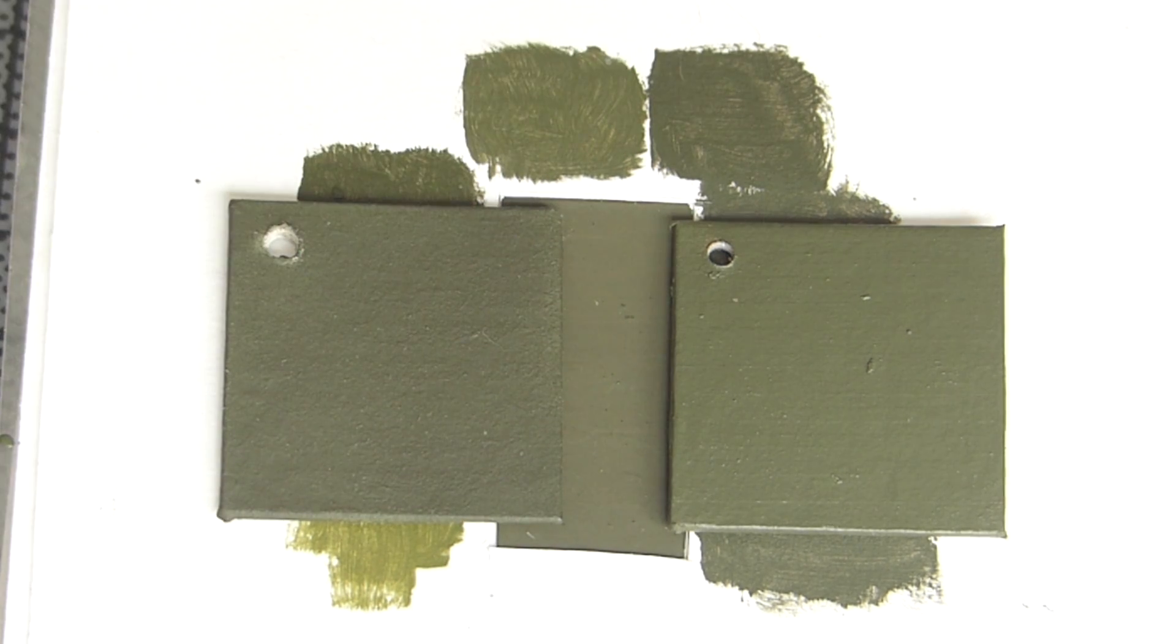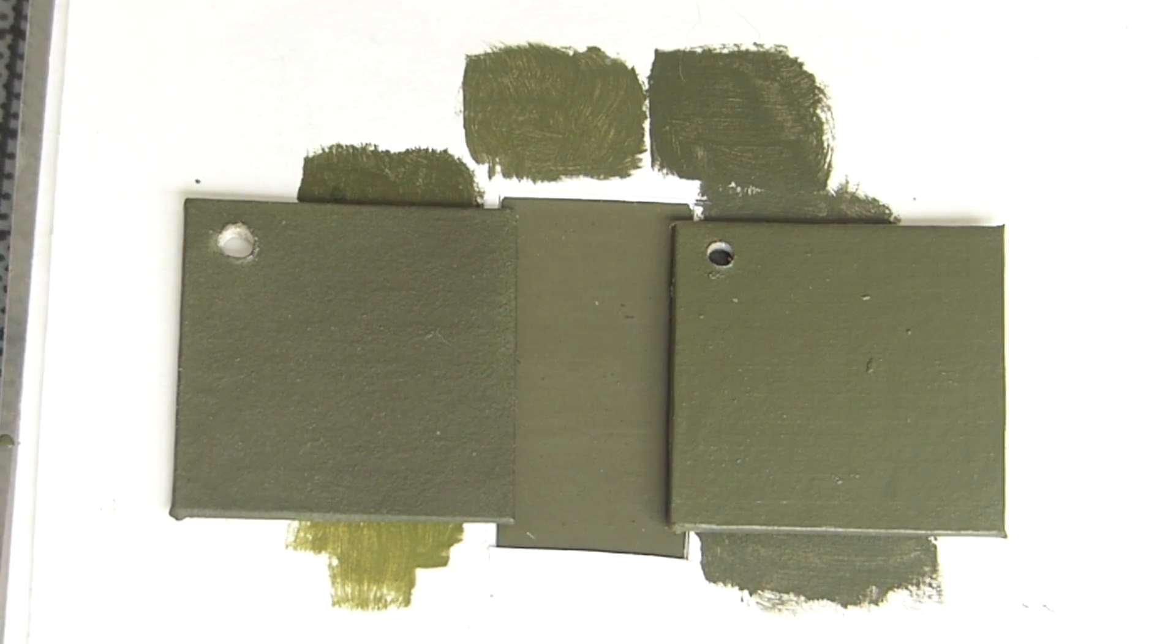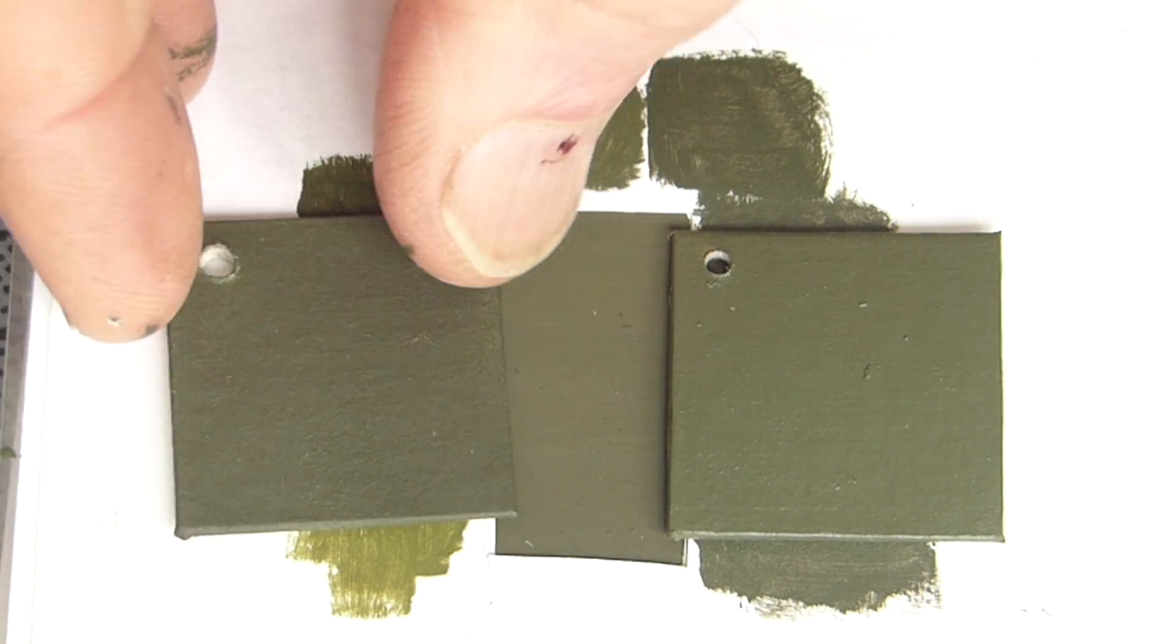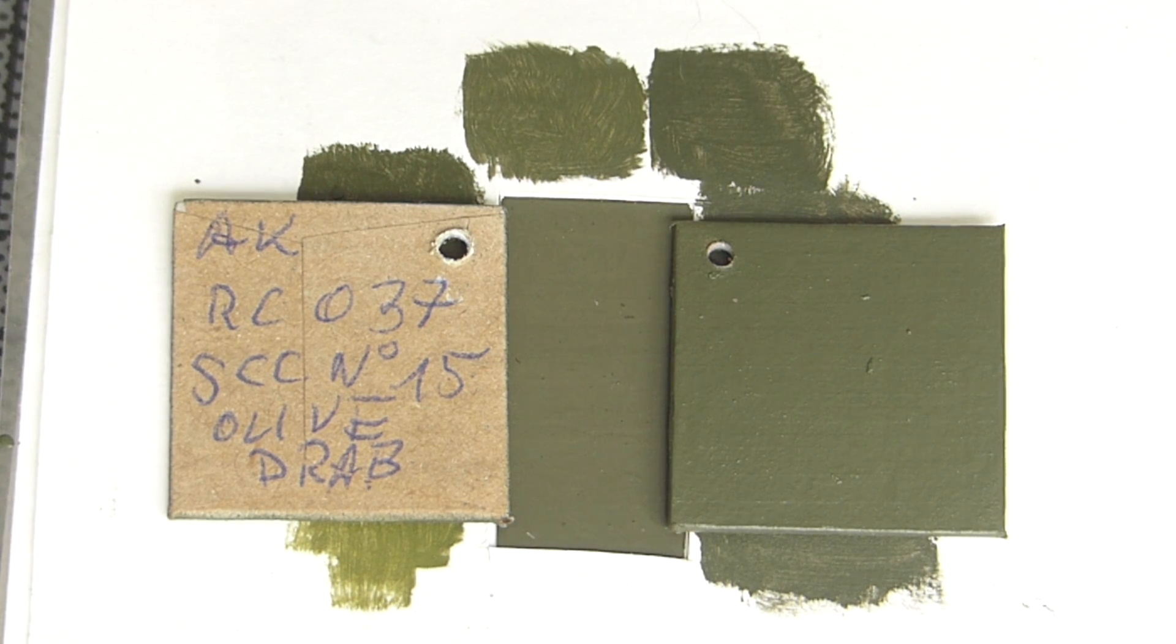Now let's compare this mixture to a commercially available version of SCC No. 15 Olive Drab. This is AK Real Color RC 037, which is a good match, but slightly darker than the original paint sheet in Mike Starmer's book.